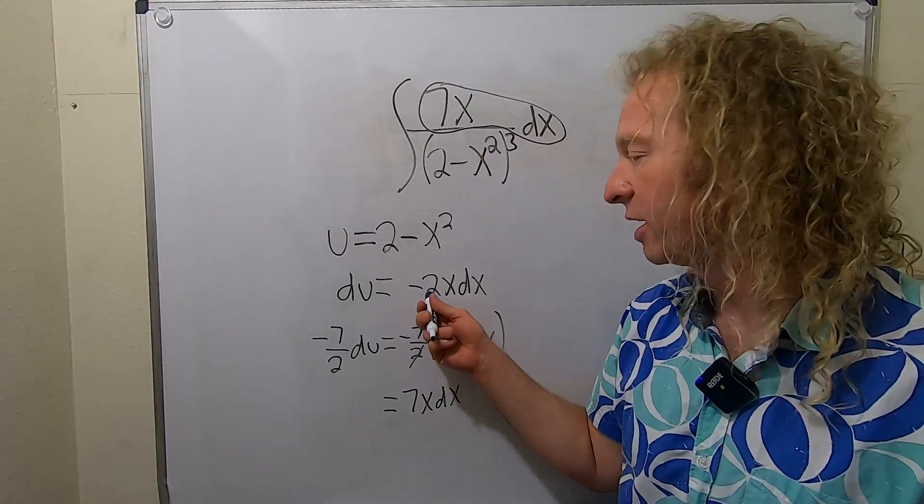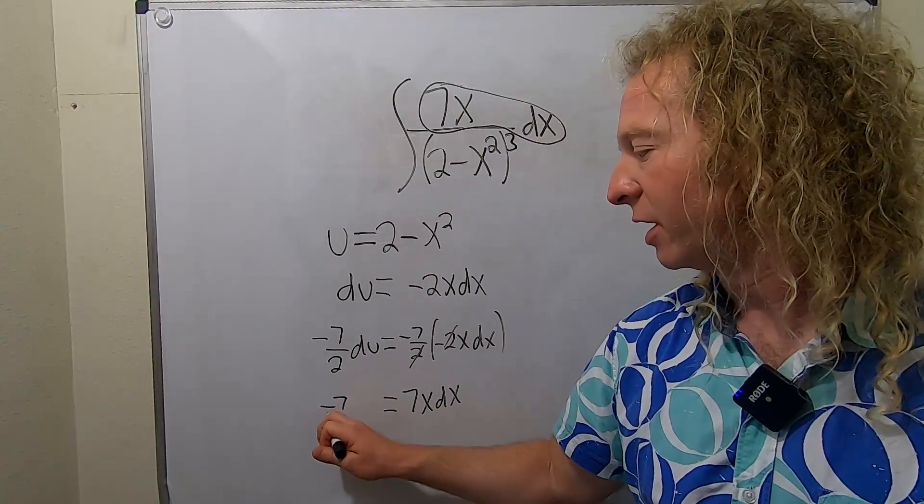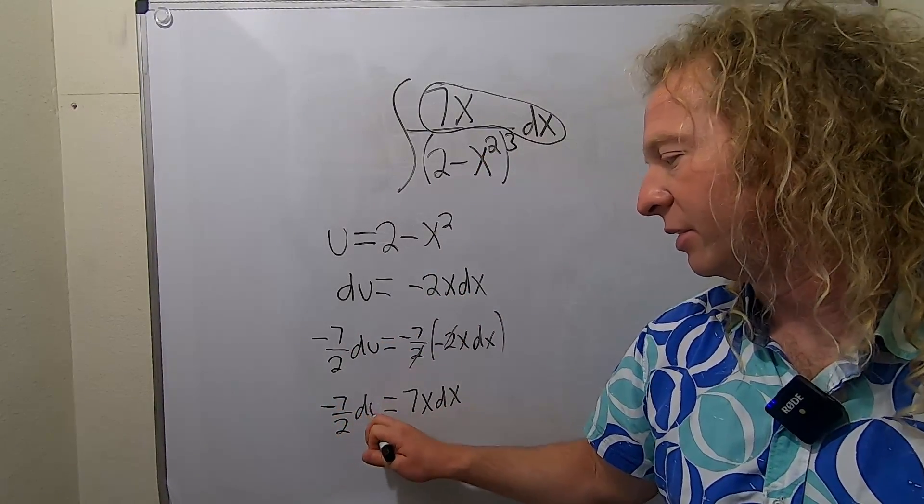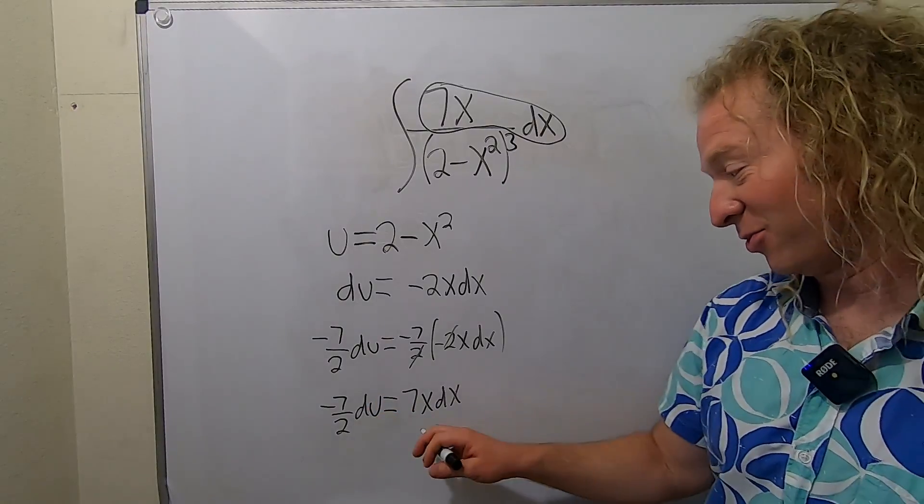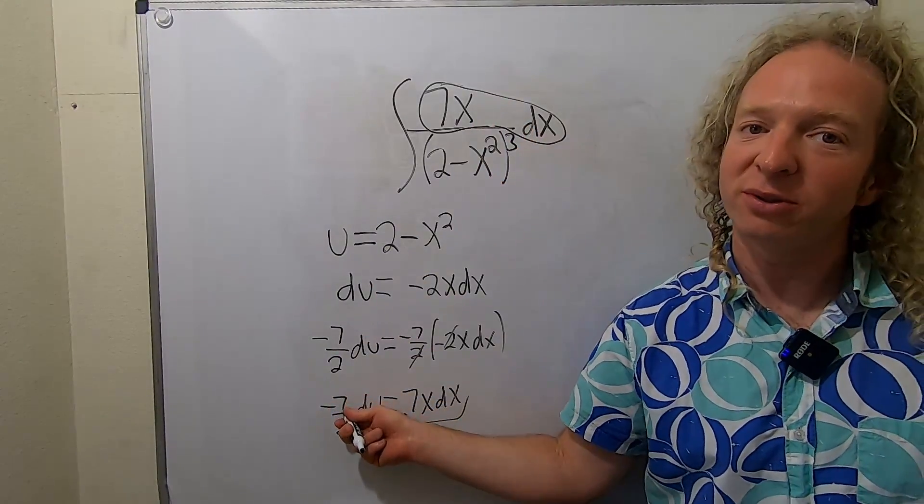So we get 7x dx. We're basically getting rid of the negative 2 and putting a 7 there, and here we have negative 7 halves du. Works out really nice. So now we have 7x dx, but that's equal to that.